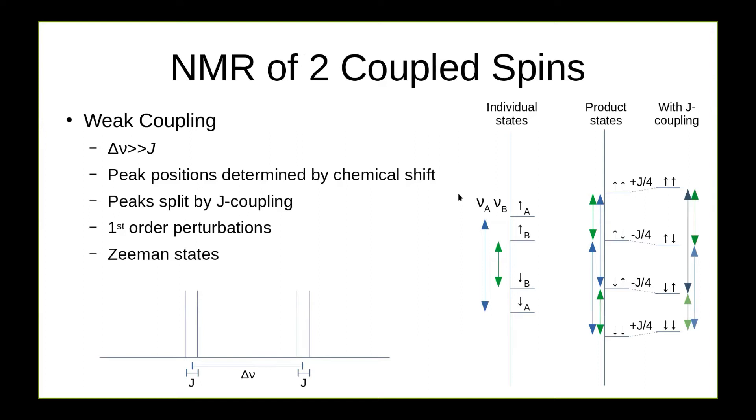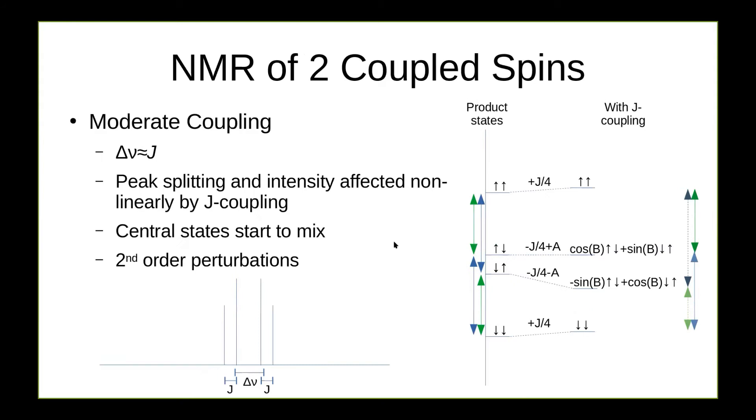So again, for the weak coupling regime, we get a nice spectrum with delta nu here and the smaller coupling due to J is all the first order perturbation. If delta nu becomes smaller, closer to the order of J, we start getting second order effects where the central states start to mix. We get extra second order terms in here. And what we see is that the inner peaks start to get bigger, the outer peaks start to get smaller.